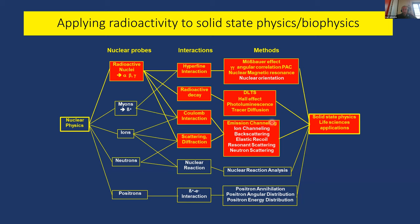Here's an overview of the techniques available at ISOLDE. We've already heard from Chris about the Mössbauer effect. There are two other techniques which exploit the hyperfine interaction: the main one I'll talk about is perturbed angular correlation. Nuclear magnetic resonance is also available. Exploiting radioactive decay properties, we have optical spectroscopy such as photoluminescence and electrical characterization techniques such as DLTS and Hall effect, plus tracer diffusion and emission channeling exploiting the Coulomb interaction.